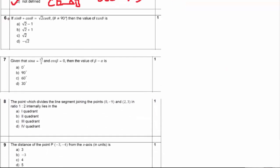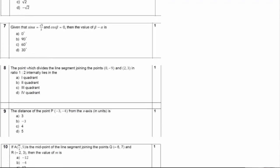Question number 6: if sin θ + cos θ = √2 cos θ — I had actually solved this in my previous video covering trigonometry sums from the sample paper, so you can watch that video for the solution.